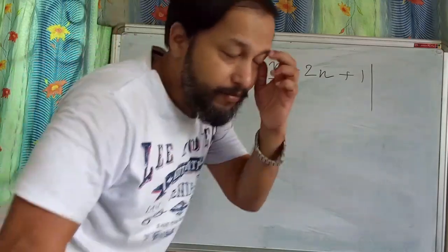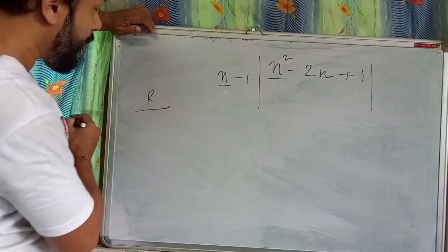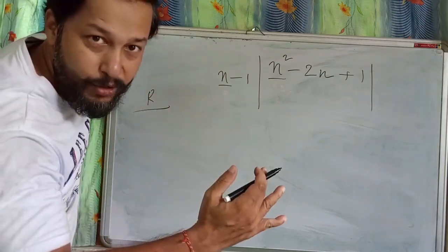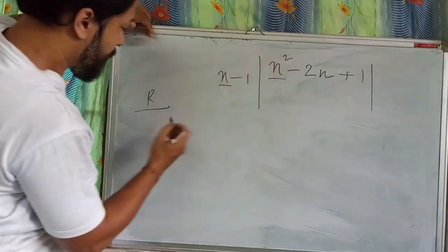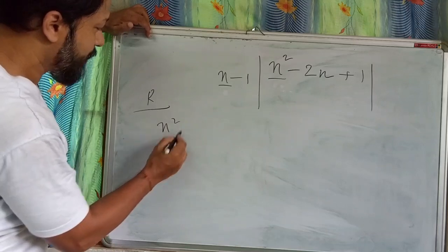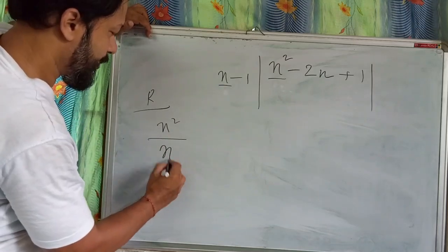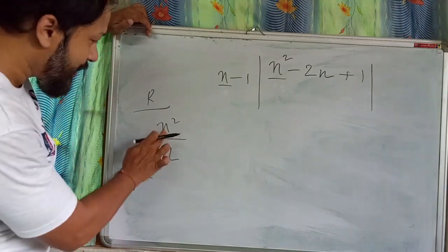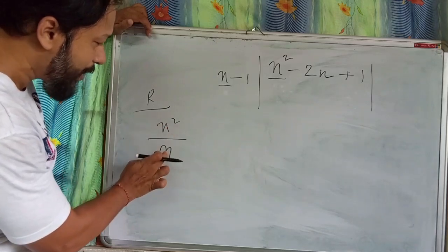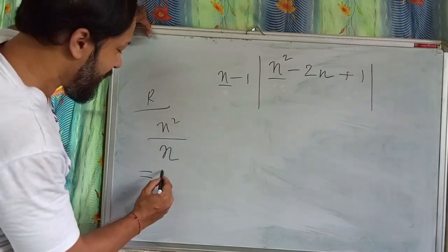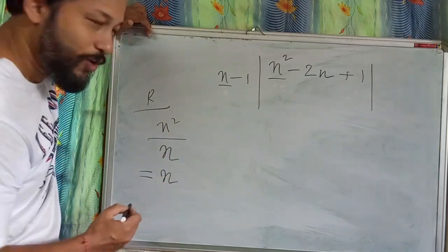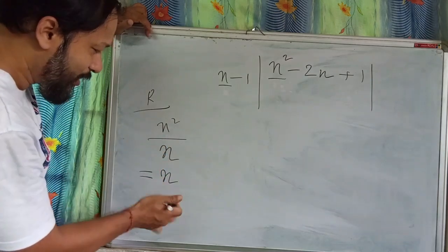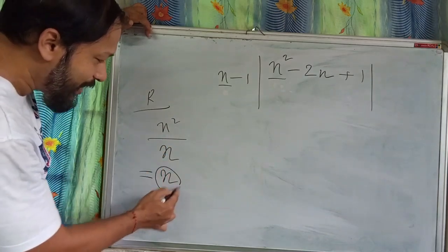In the rough work, we'll do: n² divided by n. If I cancel n² by n, what do I get? I get n. So, n² by n gives n. I will write n as the first term of the quotient.